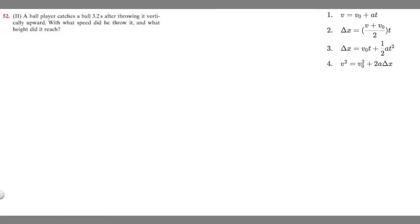In this problem we're told a ball player catches a ball 3.2 seconds after throwing it vertically upward. With what speed did he throw it and what height did it reach? Let's write down what we're given here.